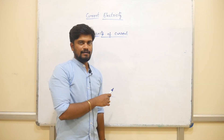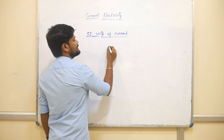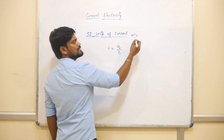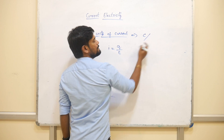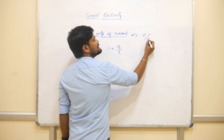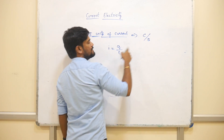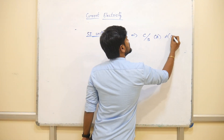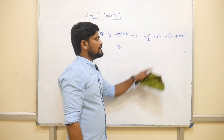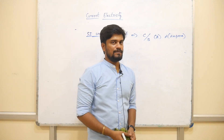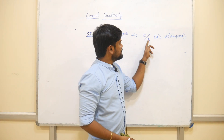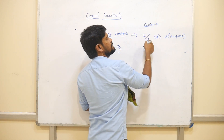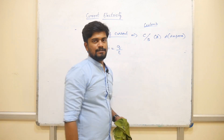So what are the units of current? Current equals charge divided by time. The unit of charge is Coulombs and time is in seconds, so the unit is Coulombs per second, which we call Ampere. That is very important.